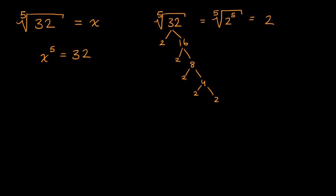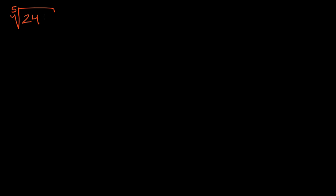Now let's do another one — it's going to be a little bit harder. Let's say we want to take the fifth root of 243, a much larger number. There are a couple of ways to do this: you could try factoring, although that's harder with a larger number, or you could do a little bit of trial and error. Doing higher roots without a calculator is a little bit more complicated.